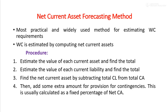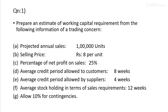In the example, the price is 8 per unit, the percentage of net profit on sales is 25%, the average credit period allowed to customers is 8 weeks, the average credit period allowed by suppliers is 4 weeks, the average stock holding in terms of sales requirements is 12 weeks, and 10% is allowed for contingencies.